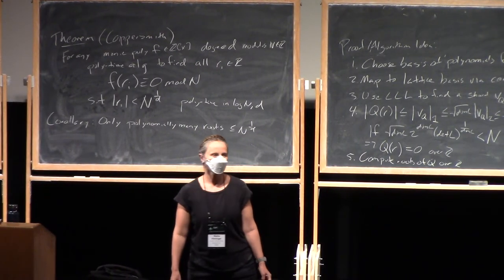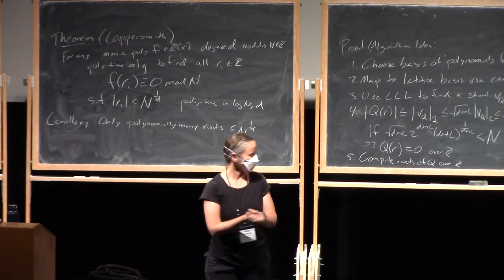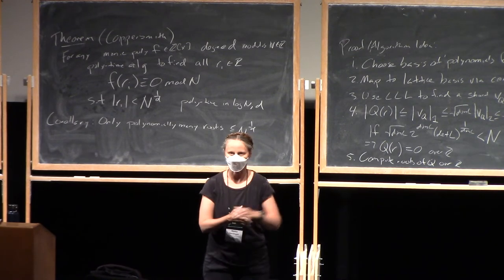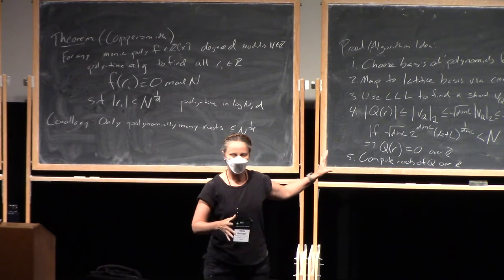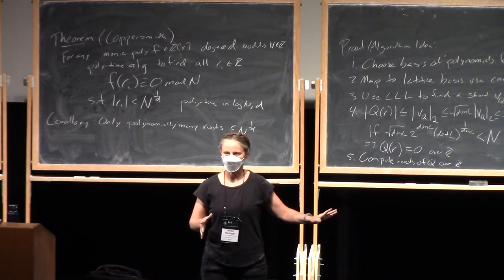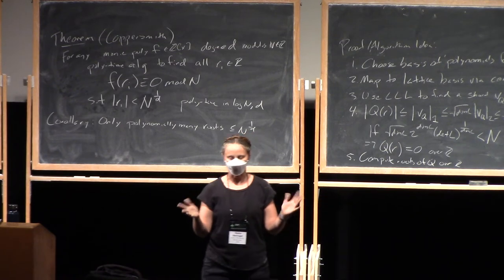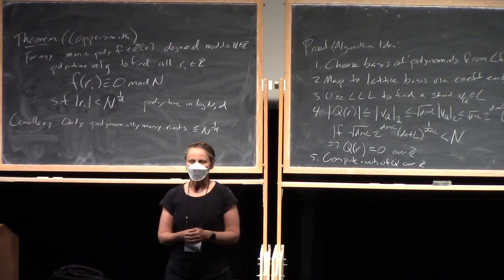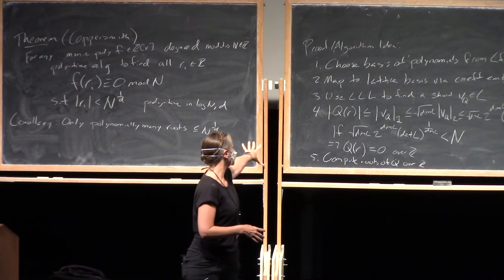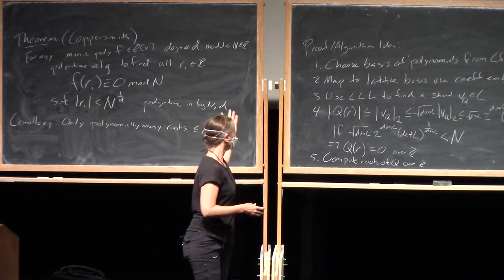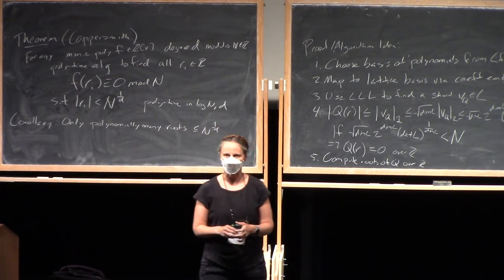But yes, it is definitely the case that when you're implementing this and with all of these lattice-based methods, getting the parameters right is super important because if you mess up, then the lattice reduction algorithm will find you something potentially not what you're looking for. But here we have the guarantee that actually any sufficiently short vector is a solution to our problem.